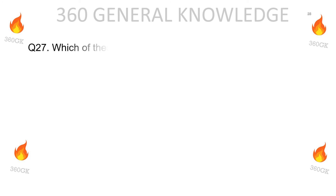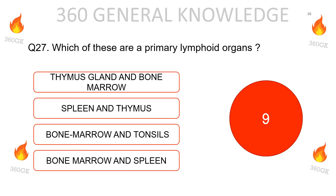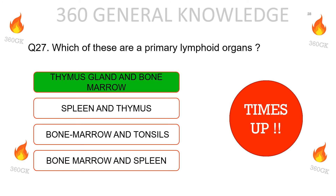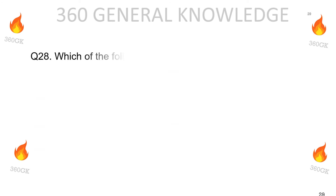Which of these are primary lymphoid organs: thymus gland and bone marrow, spleen and thymus, bone marrow and tonsils, or bone marrow and spleen? The correct answer is thymus gland and bone marrow.